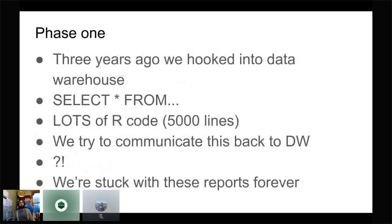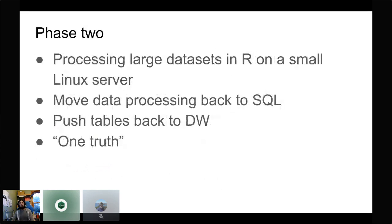Phase one started about three years ago when we started using clinical data from the data warehouse. We hooked into it and ran select-all from about seven different tables, then used loads of R code — literally 5,000 lines — to sort, filter, aggregate, and compute new values. We produced useful insights, built Shiny dashboards, and did a lot of great work. But then we tried to communicate that back to the data engineering team in the form of 5,000 lines of R code — and the effect was absolutely nothing. They quite rightly could make neither head nor tail of it, and we ended up stuck maintaining those reports forever.